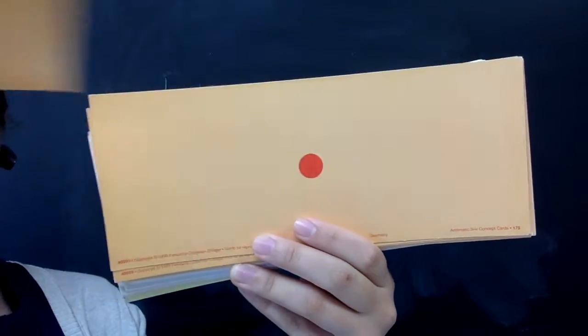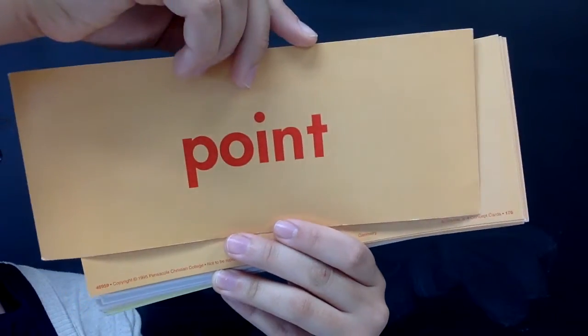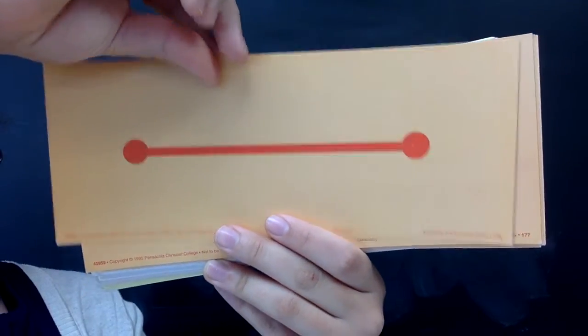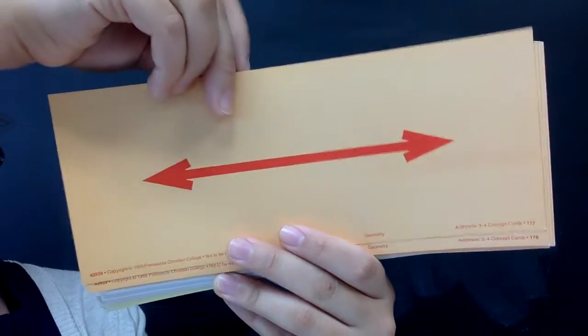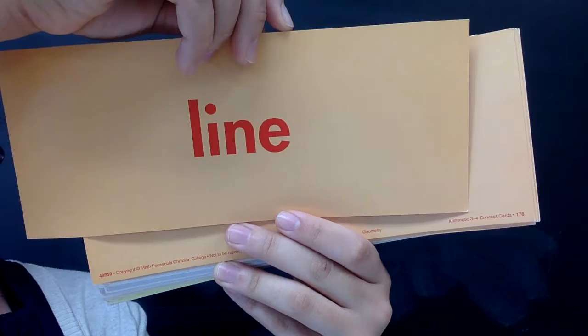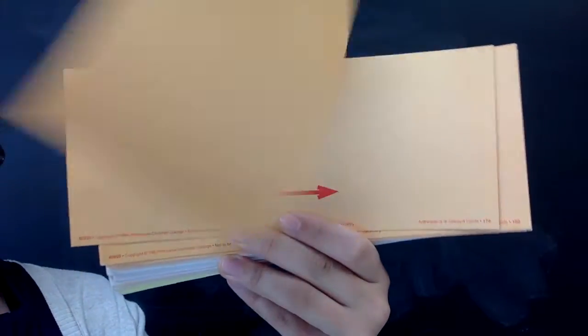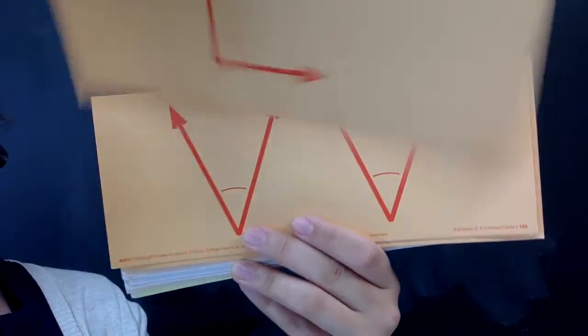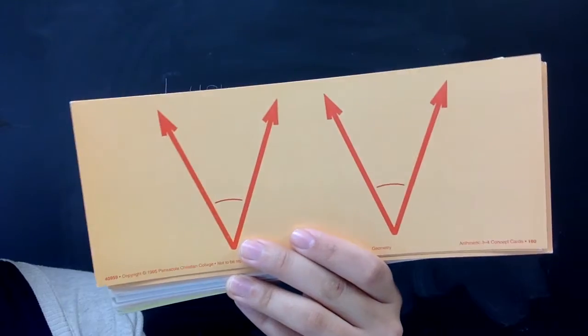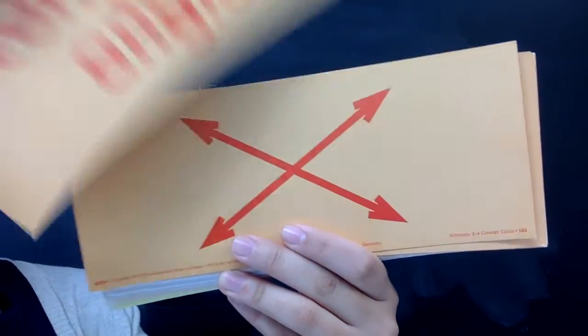Polygon. Point. Line segment. Line. Ray. Right angle. Congruent angles.